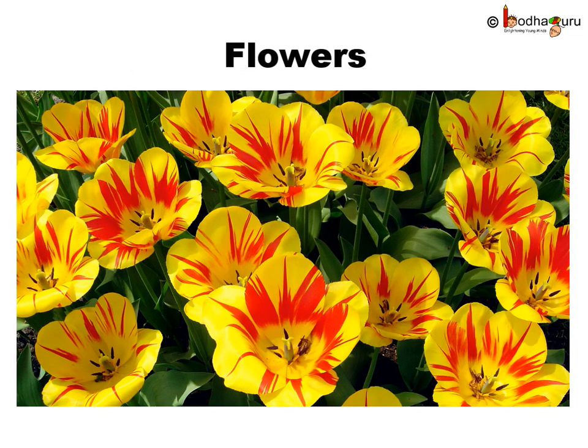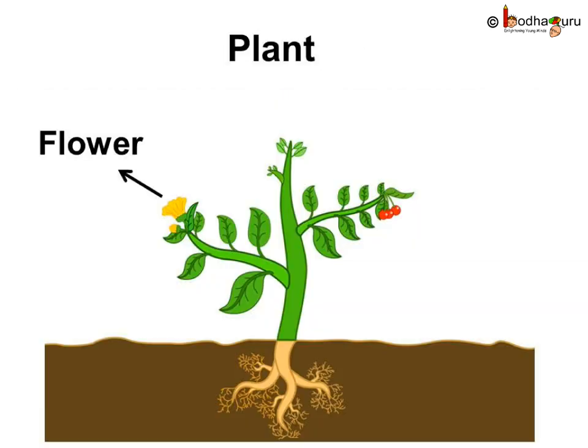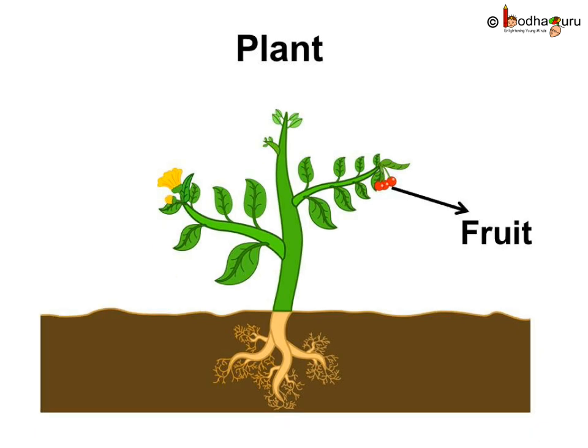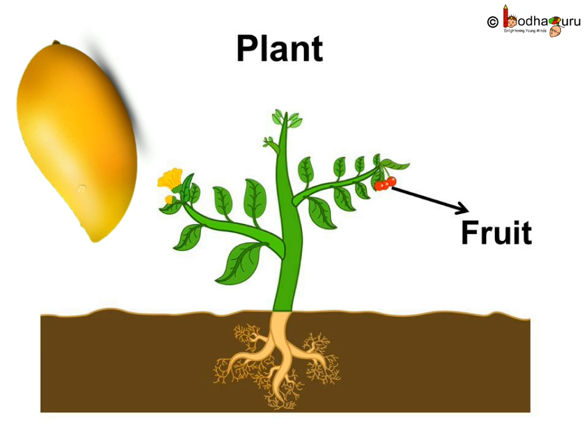Leaves are known as the kitchen of the plants. The most beautiful part of the plant is the flower. Flowers come in all colors, shapes and sizes. And flowers turn into fruits which we all love to eat, like the yummy mango.